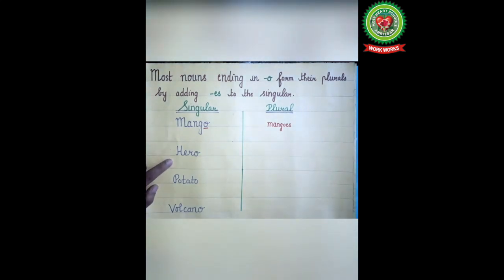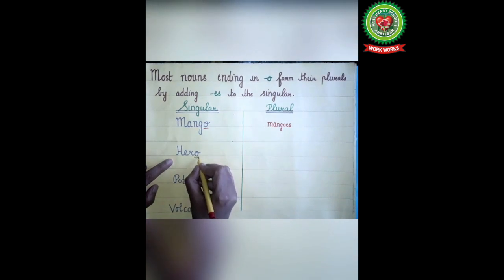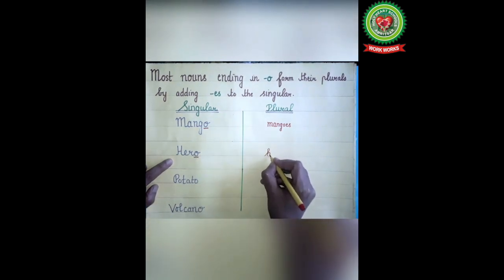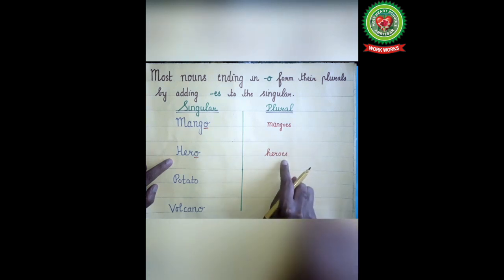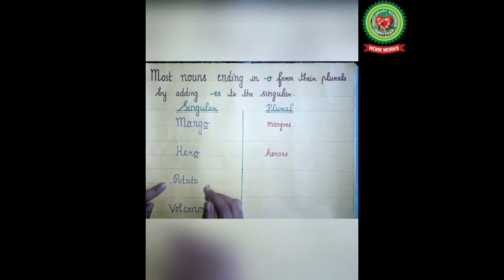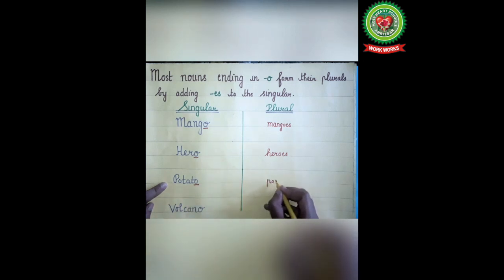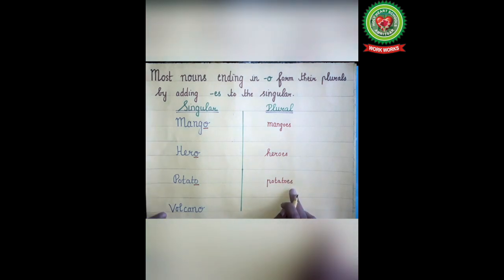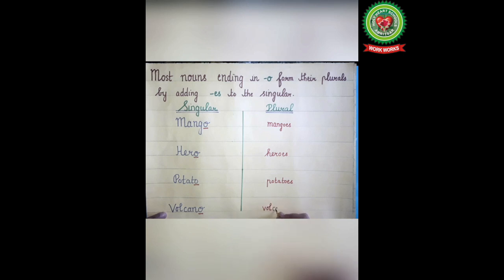Number two: 'hero' — the singular noun ends with O, so we add ES: heroes. Next, 'potato' ends with O, and its plural is potatoes. Number four: 'volcano' — the singular noun ends with O, and its plural is volcanoes.